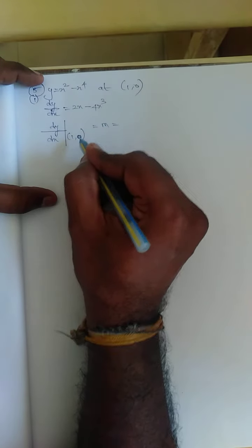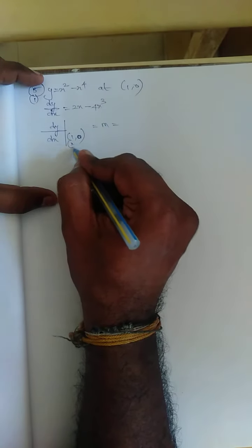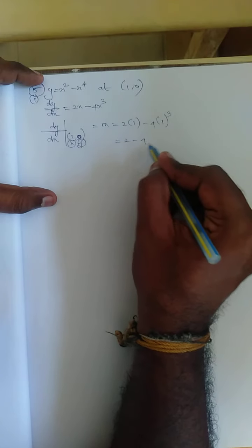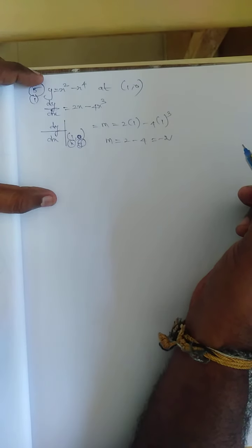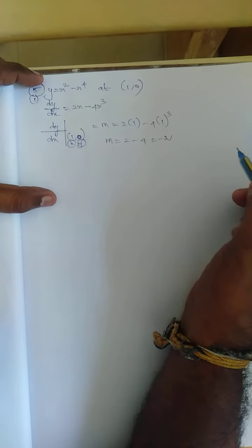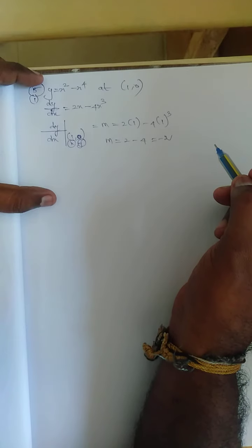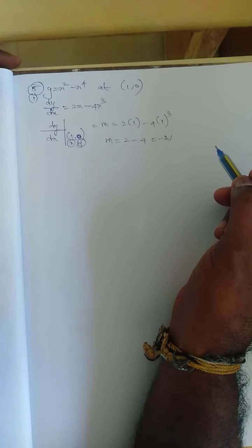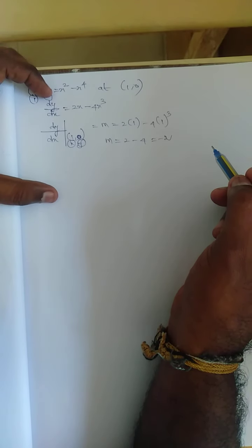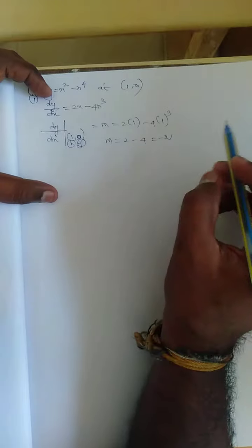At point (1, 0), x=1, so applying: 2 into 1 minus 4 into 1 cubed, which is 2 minus 4, equals minus 2. Therefore the slope m is equal to minus 2.